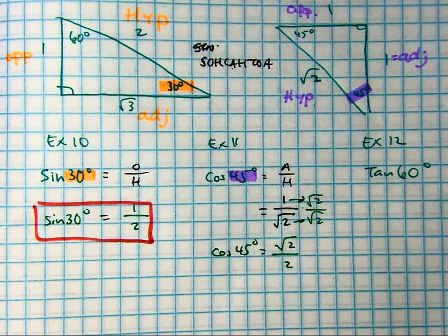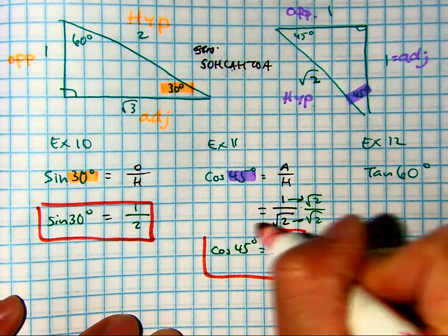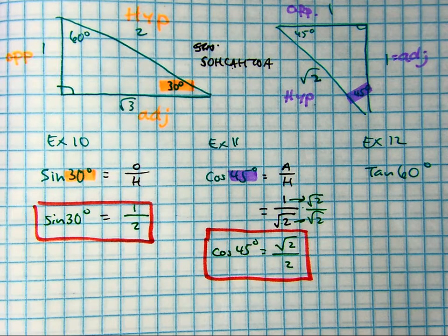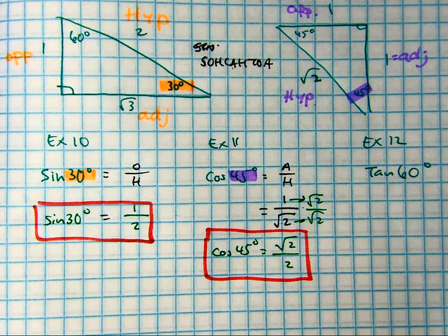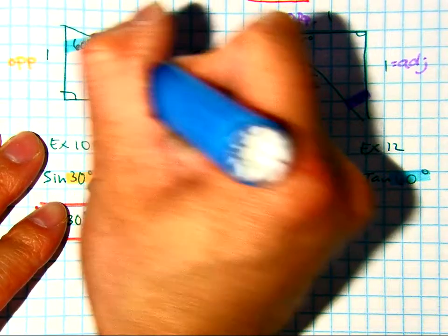And the last one. Class, which triangle is 60 degrees? It's the left one, so I'm going to highlight my starting point. Now pay attention.